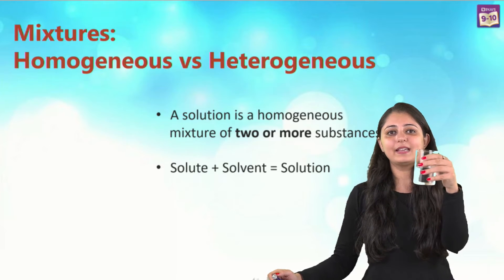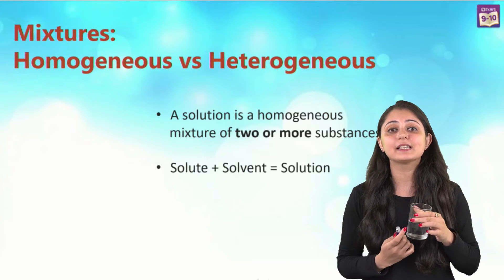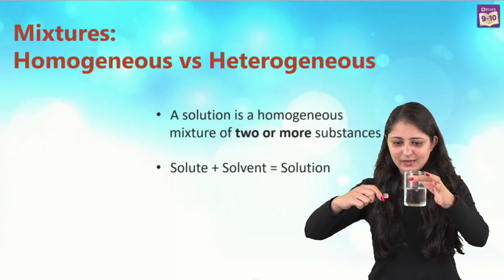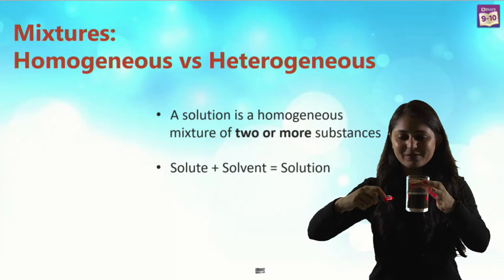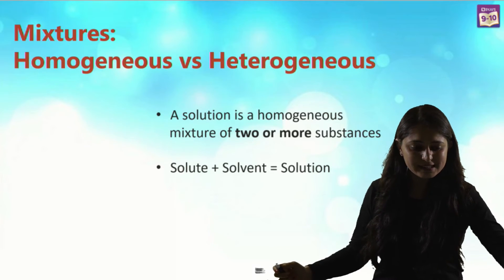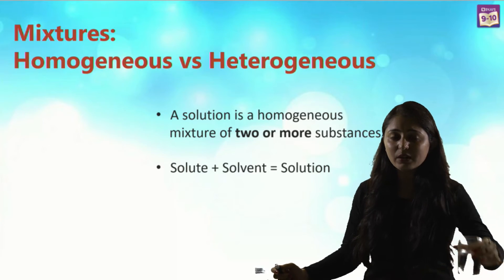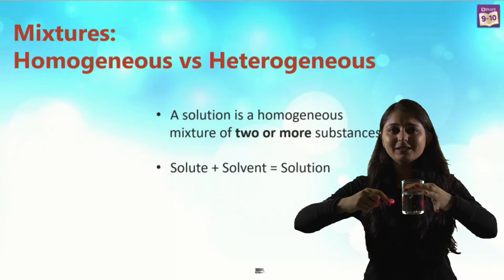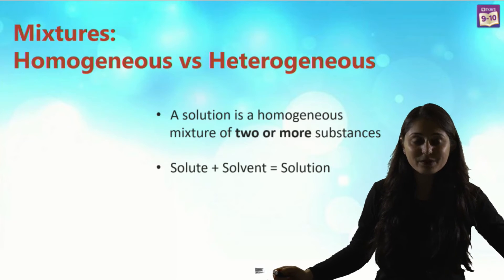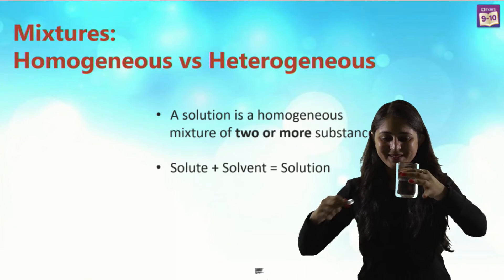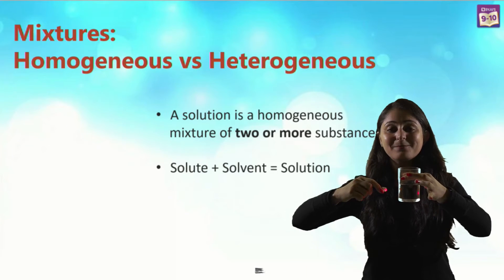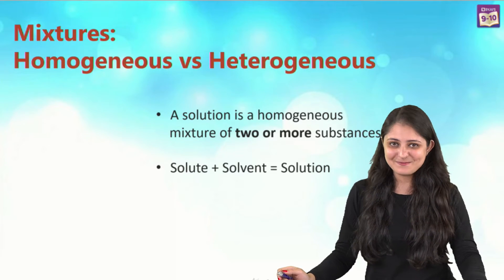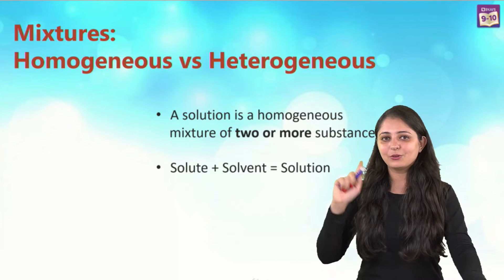We have more examples here. We have water with salt added — let's try to pass light. The path is not visible. Let's try the same with soda water — again, the path is not visible. And now with vinegar — again, the path is not visible. All of these are examples of homogeneous mixtures where the path of light was not visible.